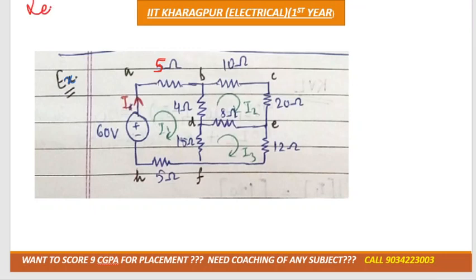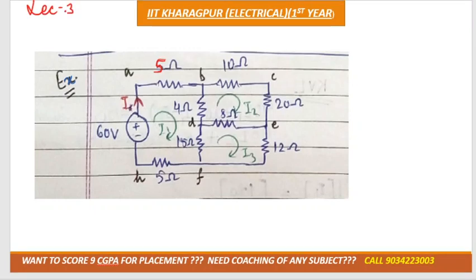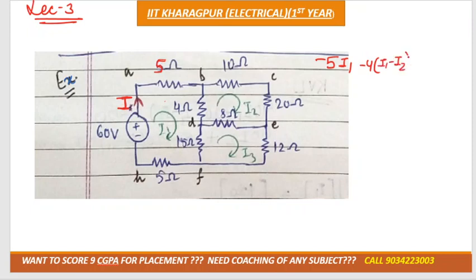In this question, they ask you to calculate current i. We'll have three mesh variables and three equations. The first mesh equation is: minus 5·i1 minus 4·(i1 minus i2) minus 15·(i1 minus i3).